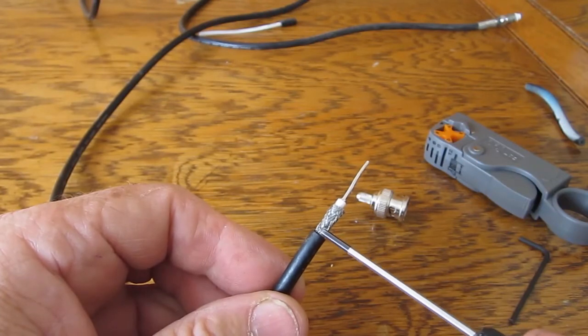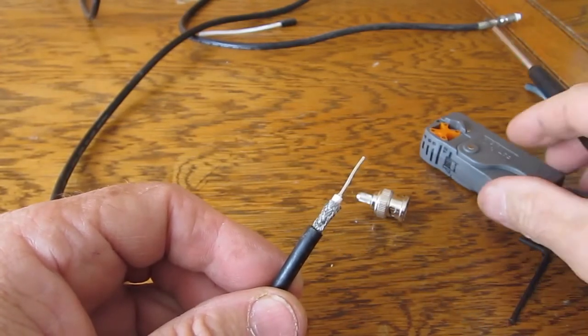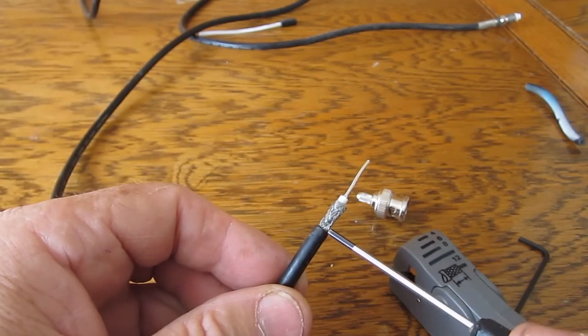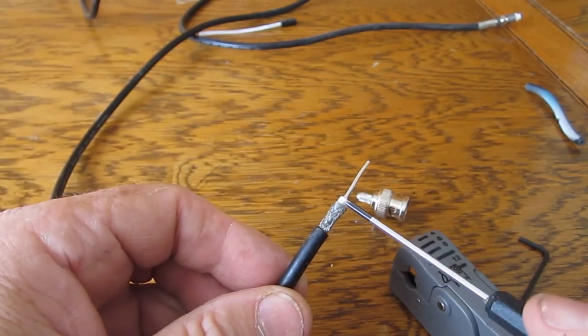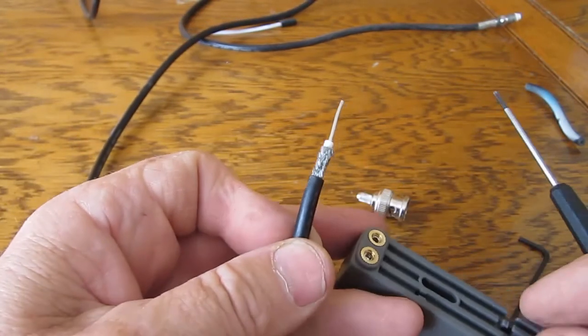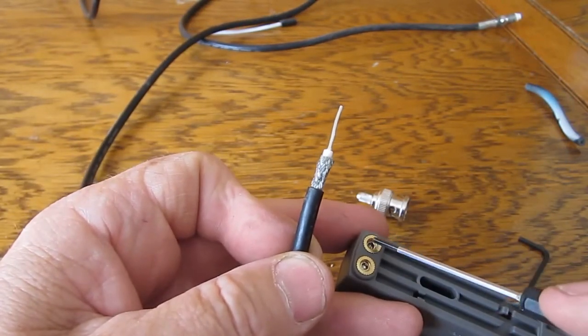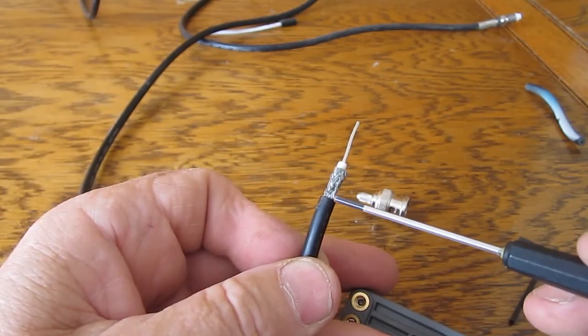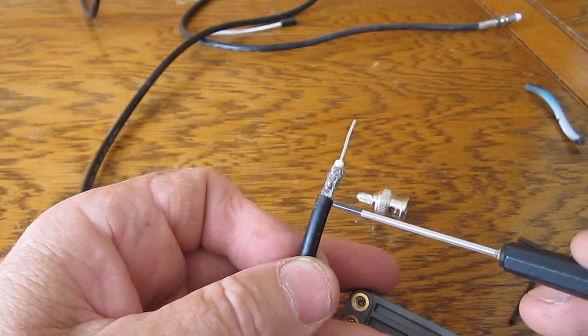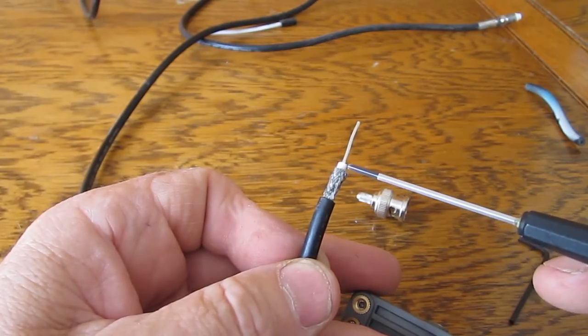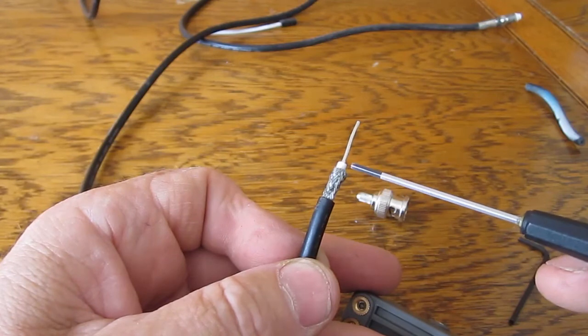The separation between your blades in this tool largely determines the gap between there and there. The depth setting, which is done with the two screws in the bottom, you adjust them until such time as this one just cuts through the black outer, and the other blade cuts through the black outer plus the braid.